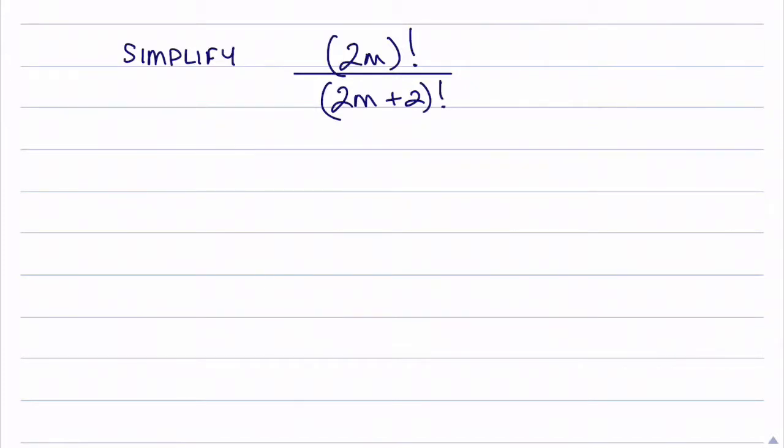In this question we're asked to simplify 2m factorial over 2m plus 2 factorial. Now I notice that the denominator is larger than the numerator, so I'm going to leave the numerator as it is, so 2m factorial.